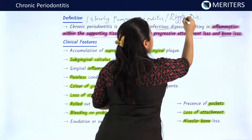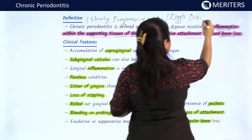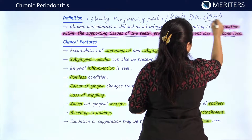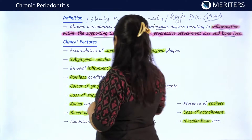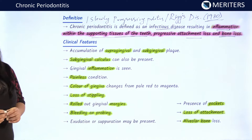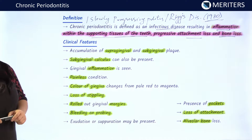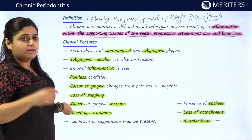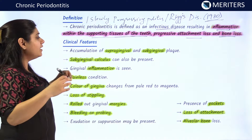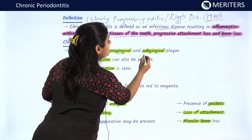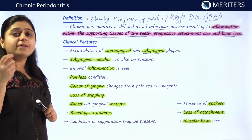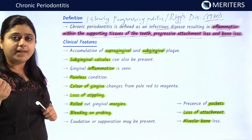This name was given to chronic periodontitis in 1980. The different clinical features of chronic periodontitis are: because of the accumulation of supra-gingival and sub-gingival plaque and calculus, the gingiva becomes inflamed.